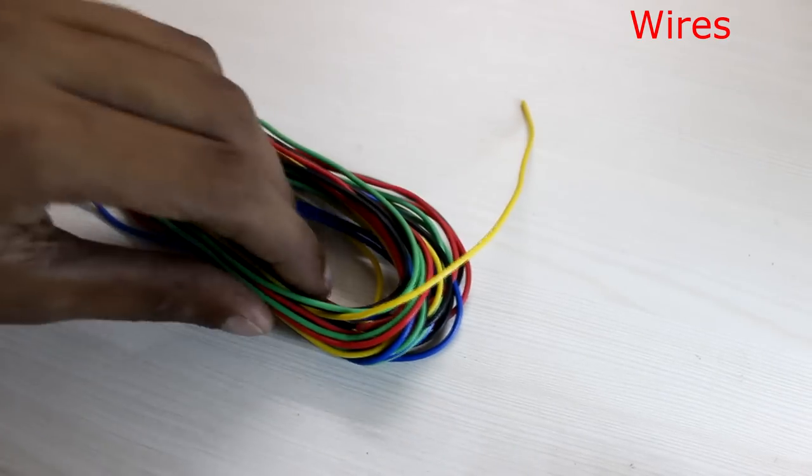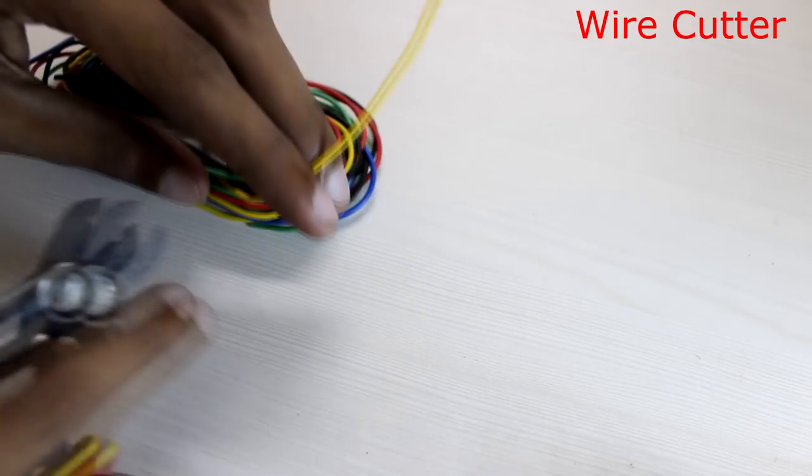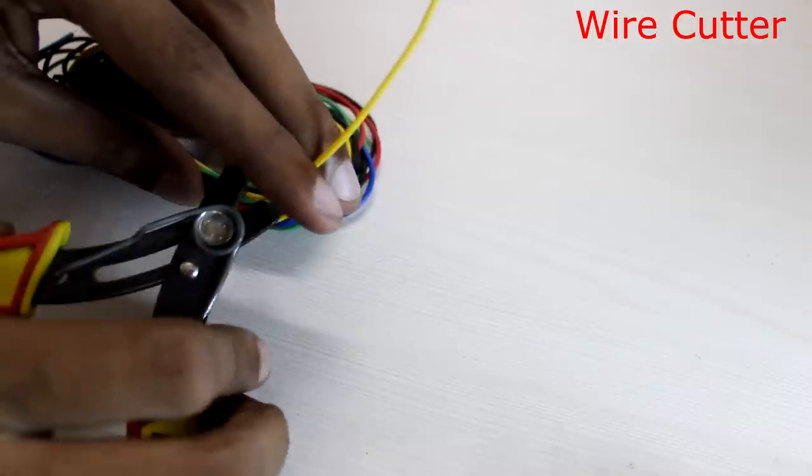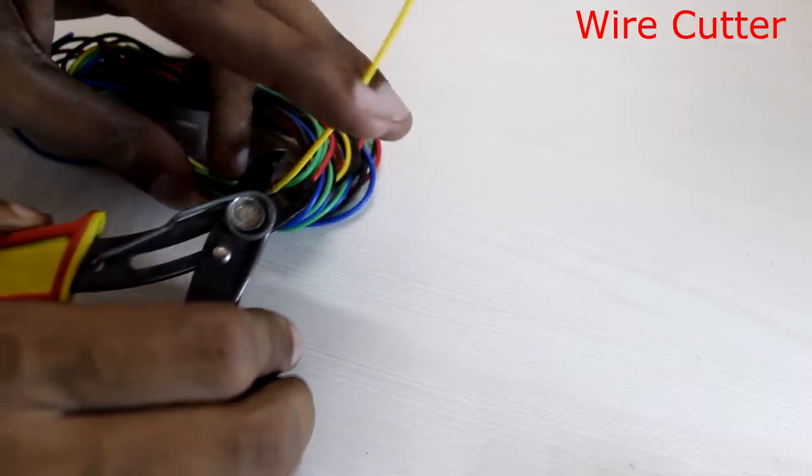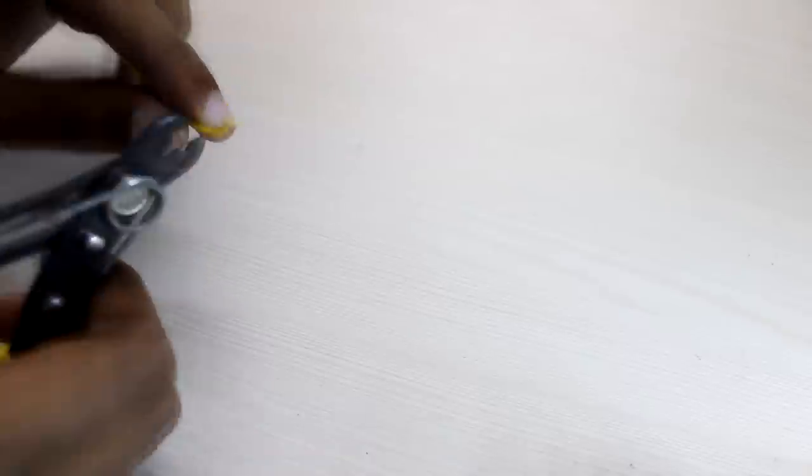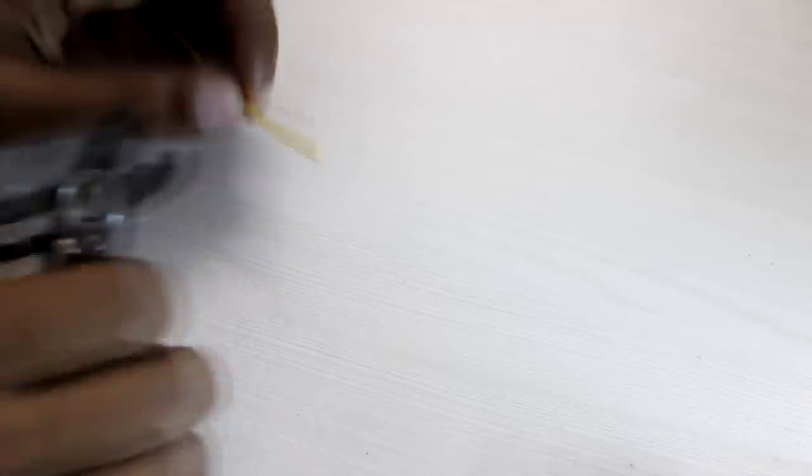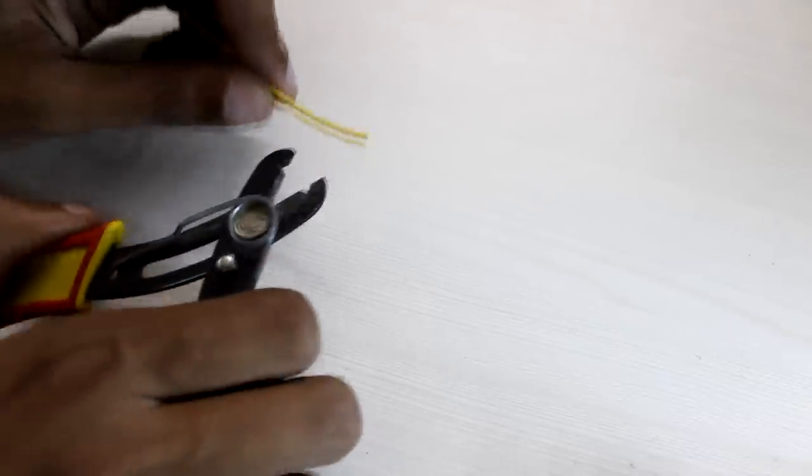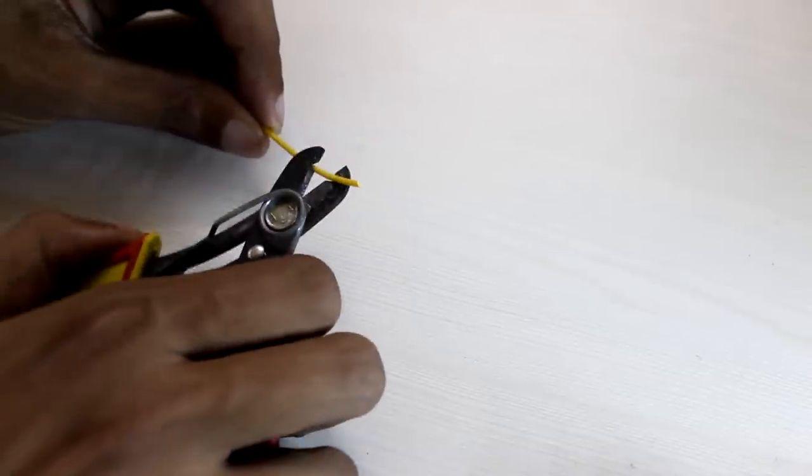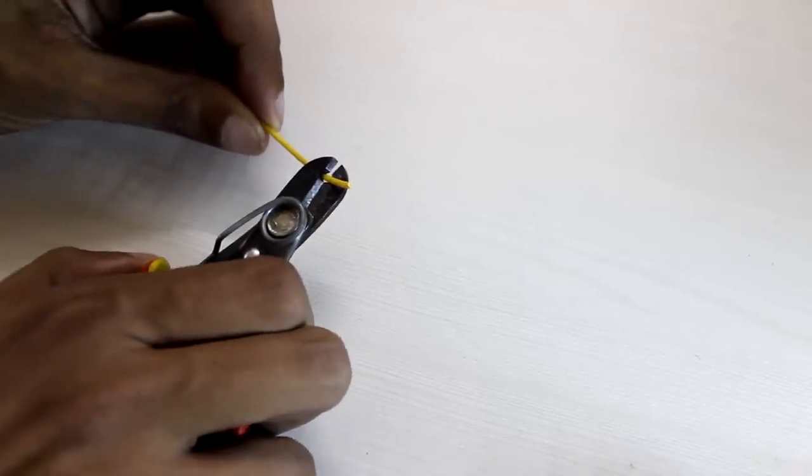We can use these wires to connect our circuit. And this is a wire cutter. You can cut the wires by using the flat region of this cutter like this. Let's cut it again. Flat region cut.